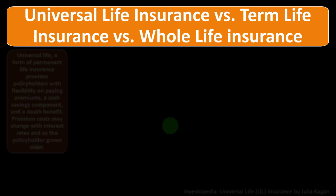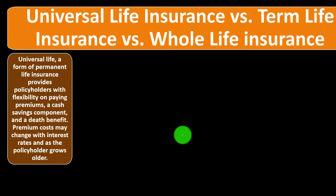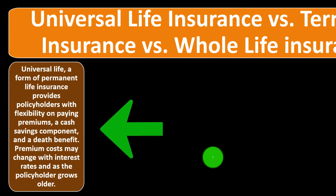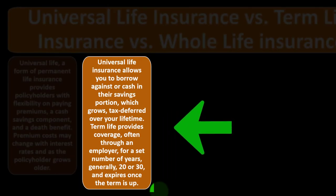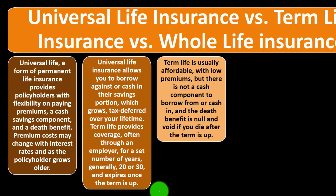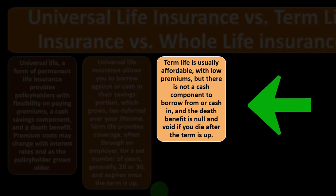Universal life insurance versus term life insurance versus whole life insurance. Universal life, a form of permanent life insurance, provides policyholders with flexibility on paying premiums, a cash savings component, and a death benefit. Premium costs may change with interest rates and as the policyholder grows older. Universal life insurance allows you to borrow against or cash in your savings portion, which grows tax-deferred over your lifetime. Term life provides coverage often through an employer for a set number of years — generally 20 or 30 — and expires once the term is up.